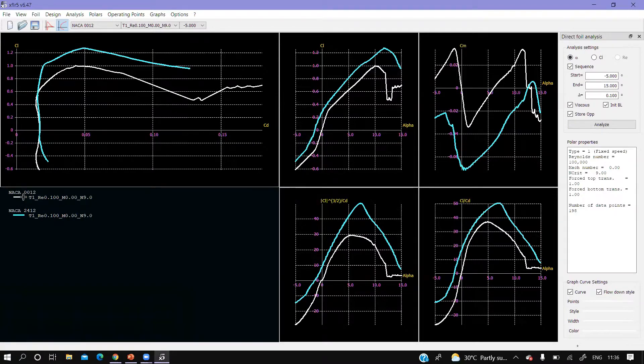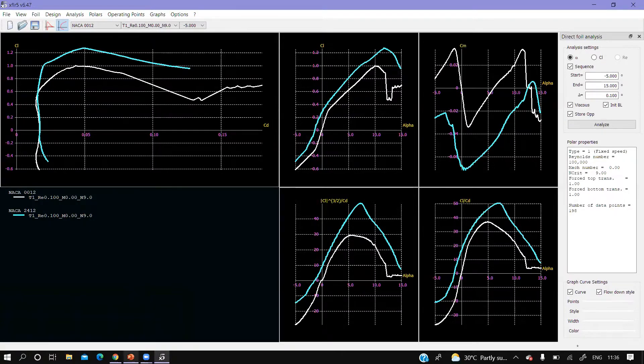The white color is NACA 0012 and the sky blue color is NACA 2412. These are CL vs CD - the drag polar. Now let's get started on what drag polar is all about.